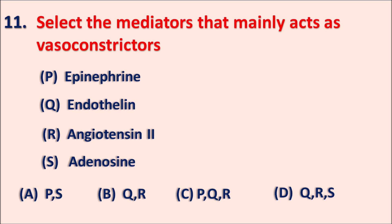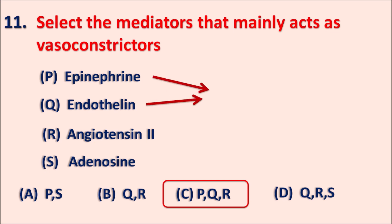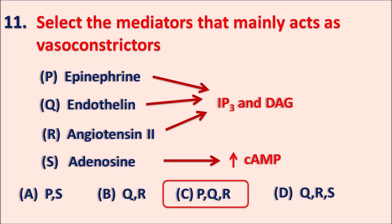The right answer is C, P-Q-R. Epinephrine, endothelin, and angiotensin II all act as vasoconstrictors. They act through an increase in IP3 and diacylglycerol. This IP3 and diacylglycerol increase the intracellular calcium levels within the vascular smooth muscle, which results in vasoconstriction. On the other hand, adenosine is a vasodilator which increases cyclic AMP levels, resulting in vasodilation.